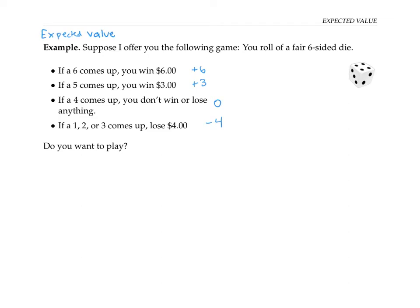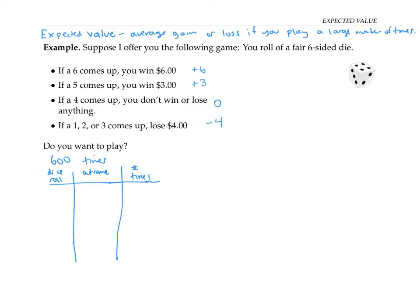Expected value can be thought of as your average gain or loss if you play the game a large number of times. Let's say you play 600 times. Let's chart out what we would expect to happen. So I'll put my dice roll here, the outcome when we make that roll here, and the number of times we expect that to happen in my third column.